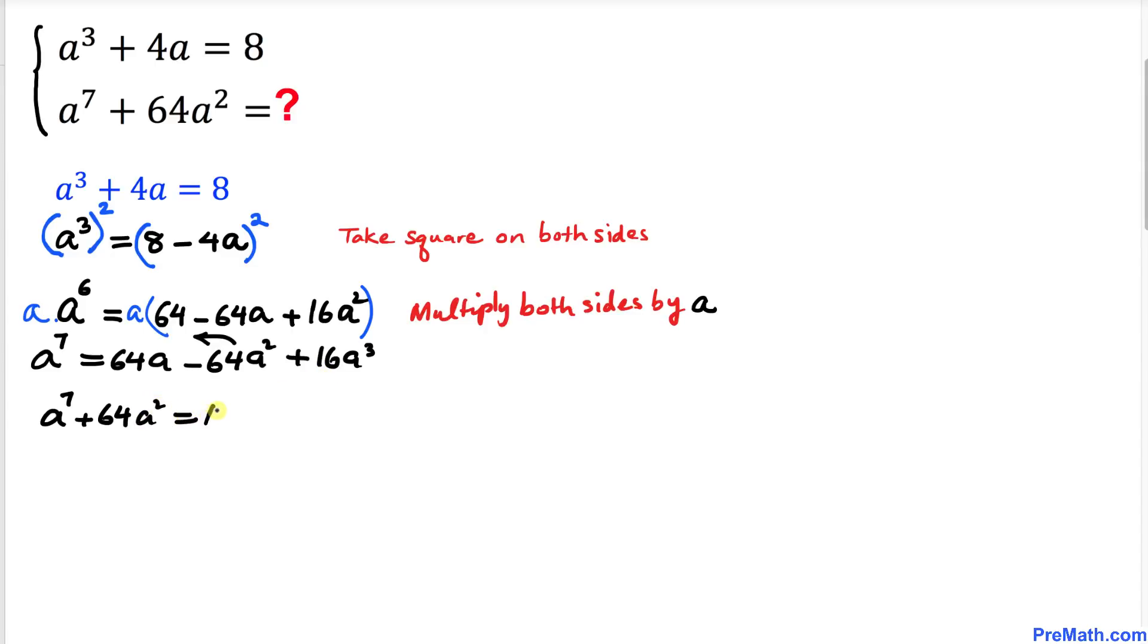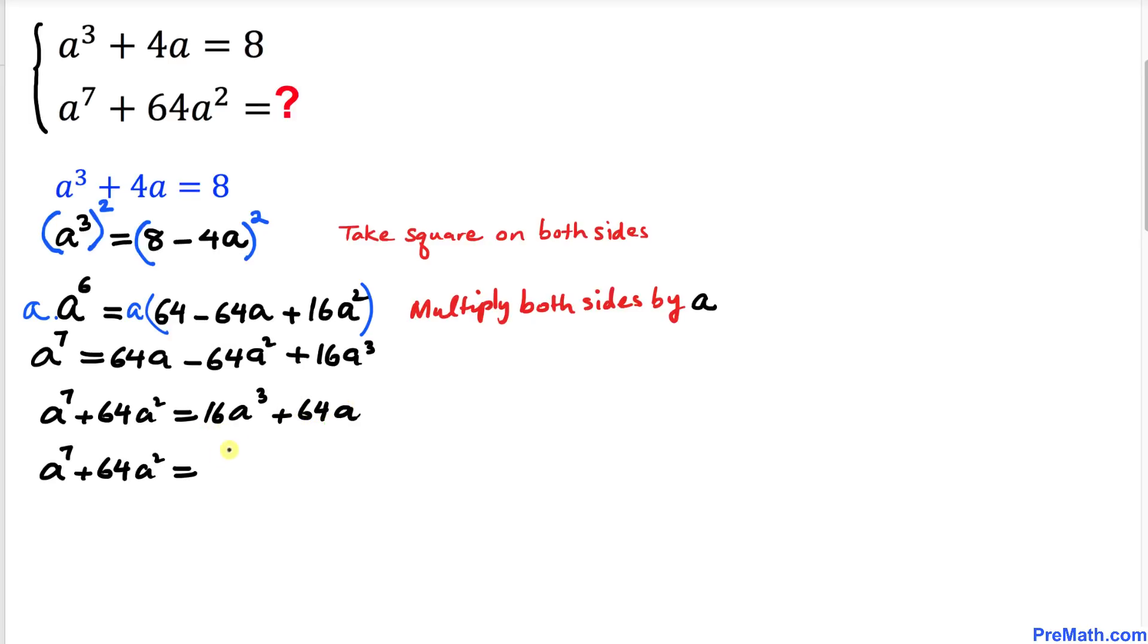Now we can see we have a 16 in common between these two terms, so I can take 16 as a factor outside, and in the parentheses we're going to have a³ + 4a. And now we know that this a³ + 4a is 8 from our very first equation.